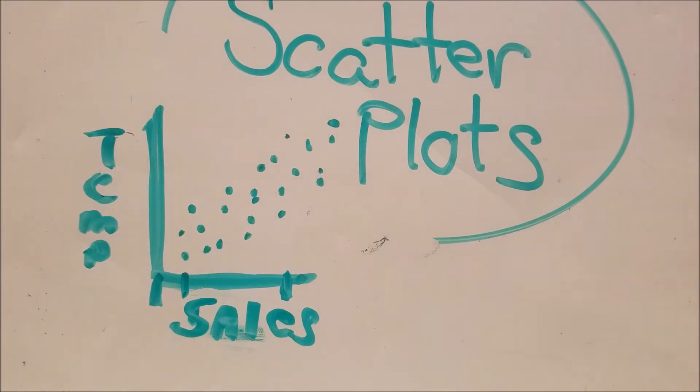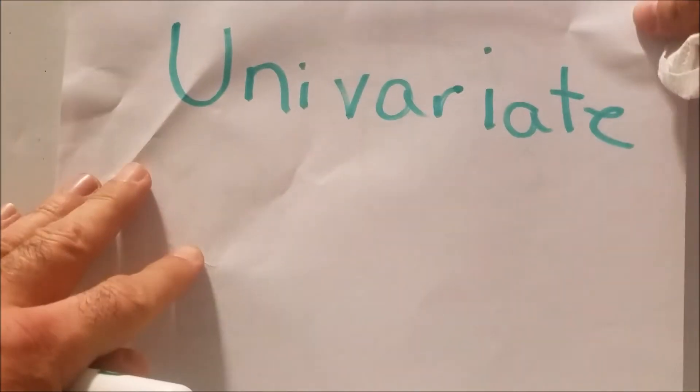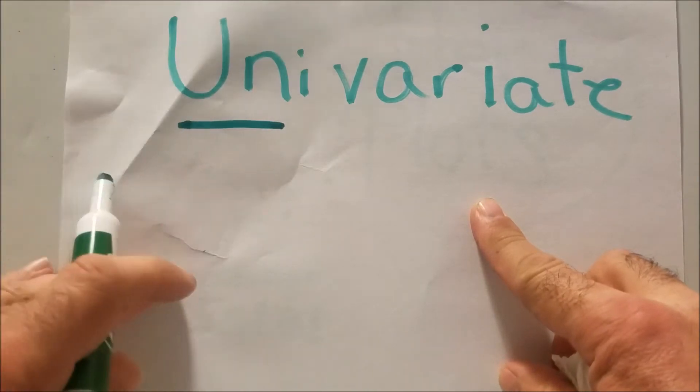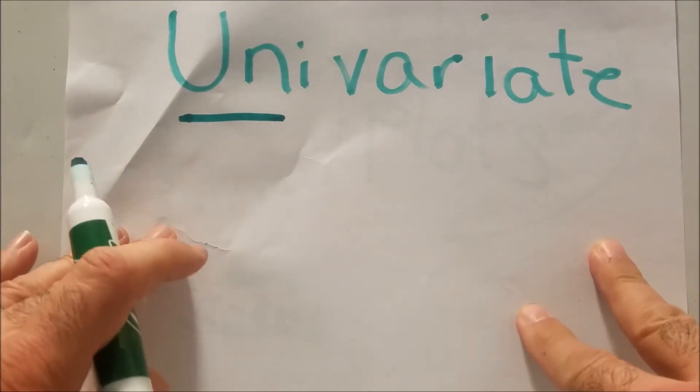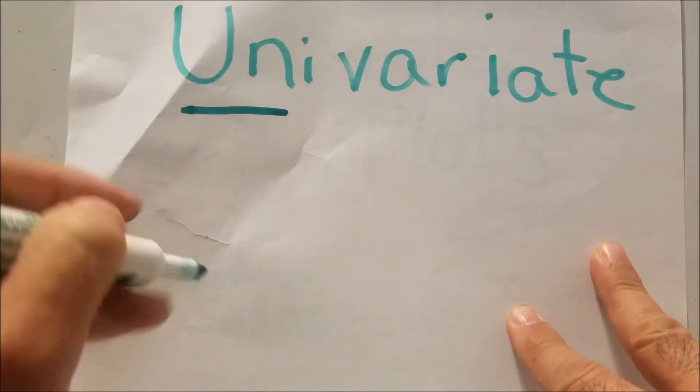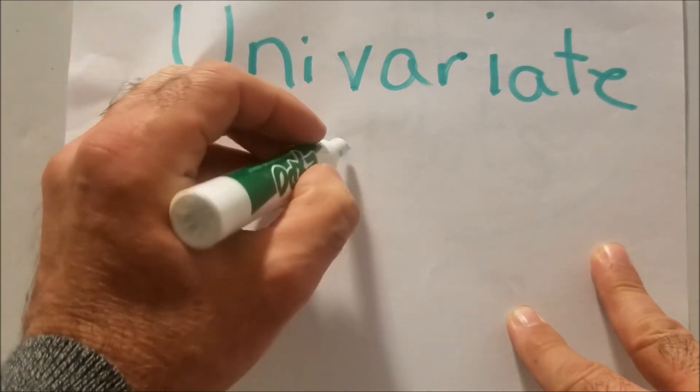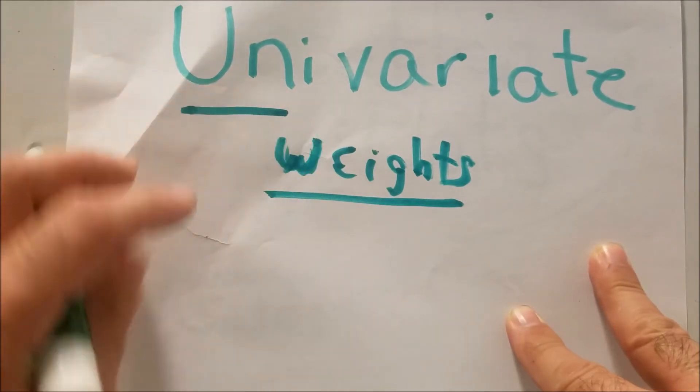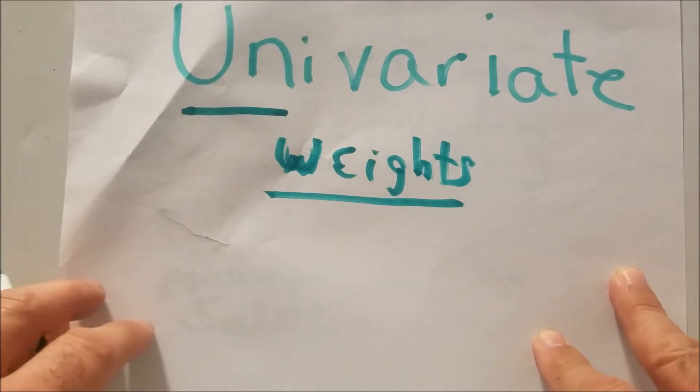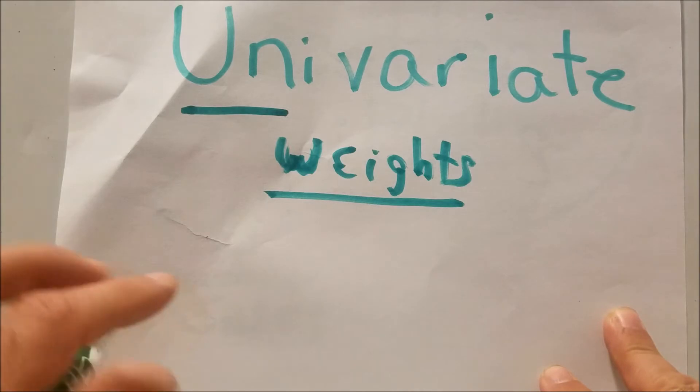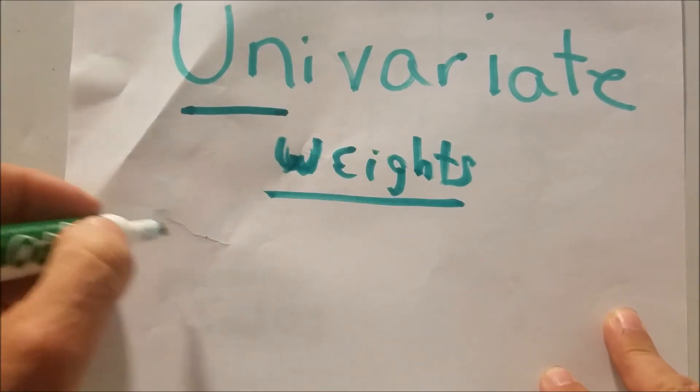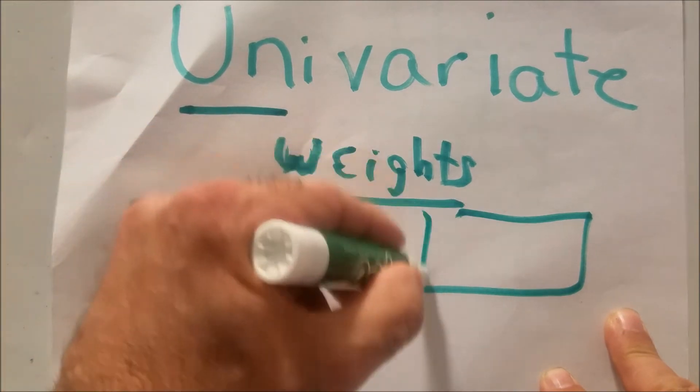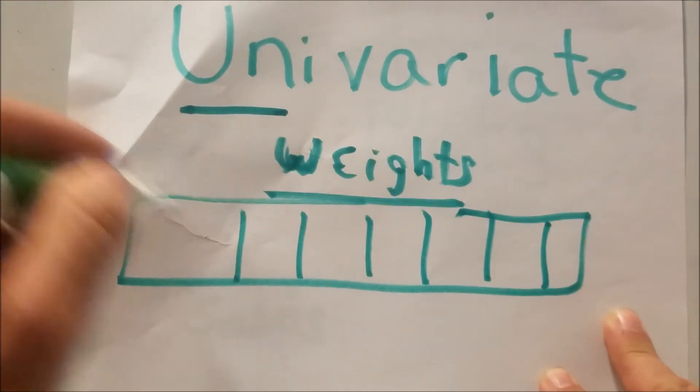So before we talk about that, let's talk about some terms. The first term is univariate. So univariate, the key word here is uni, means one. There's one variable involved. So let's say that you just wanted to know the weights. You were just wanting to know the weights of your puppies. Let's say you worked at Petco or you worked at some pet store and you wanted to weigh the puppies. So there's just one thing you're doing. You're just weighing the puppies. You're not comparing them. There's no correlation. You're just weighing the puppies.